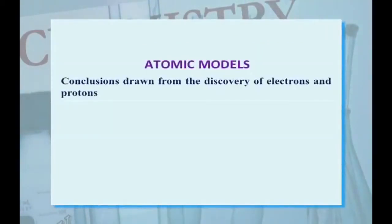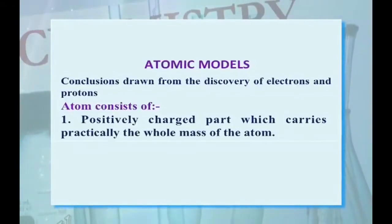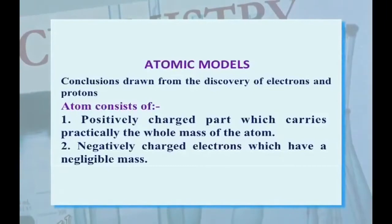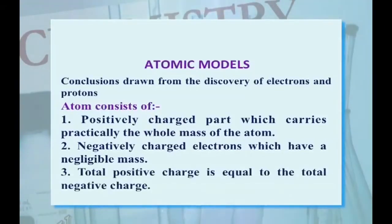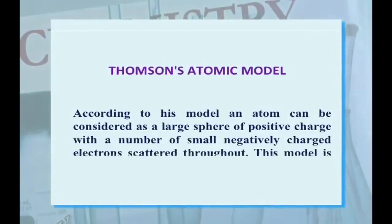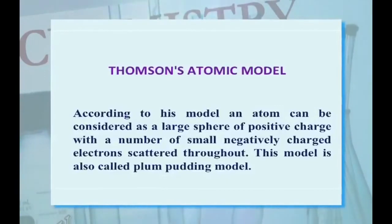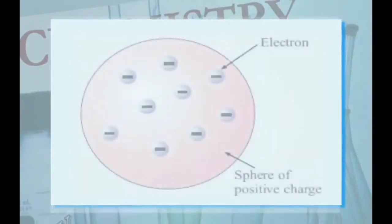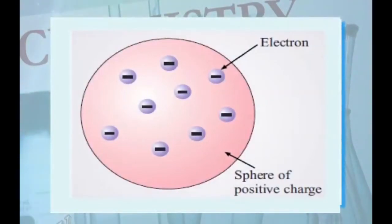Atomic Models. Conclusions drawn from the discovery of electrons and protons: First, an atom consists of positively charged particles which carry practically the whole mass of the atom. Second, negatively charged electrons which have negligible mass. Third, the total positive charge is equal to the total negative charge. According to the Thomson atomic model, an atom can be considered as a large sphere of positive charge with a number of small negatively charged electrons scattered throughout. This model is also called the Plum-Pudding model, where the sphere indicates the positive charge and the negative charge is embedded or scattered within this sphere.